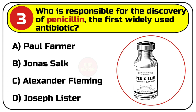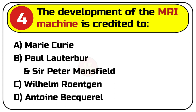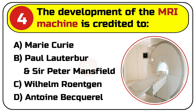Correct answer is C. Alexander Fleming. Question number 4. The development of the MRI machine is credited to: A. Marie Curie, B. Paul Lauterbur and Sir Peter Mansfield, C. Wilhelm Röntgen, D. Antoine Becquerel.